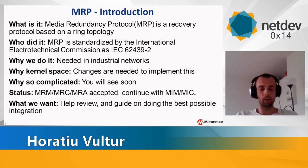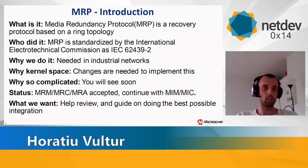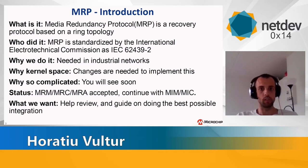What is MRP? MRP is media redundancy protocol. It's a recovery protocol based on ring topology with fast recovery times of a single failure in the ring. MRP is standardized by the International Electrotechnical Commission, and it's primarily used in industrial networks because it's cheaper to have ring topology than to have a switch in a central location and aggregate all these other switches.